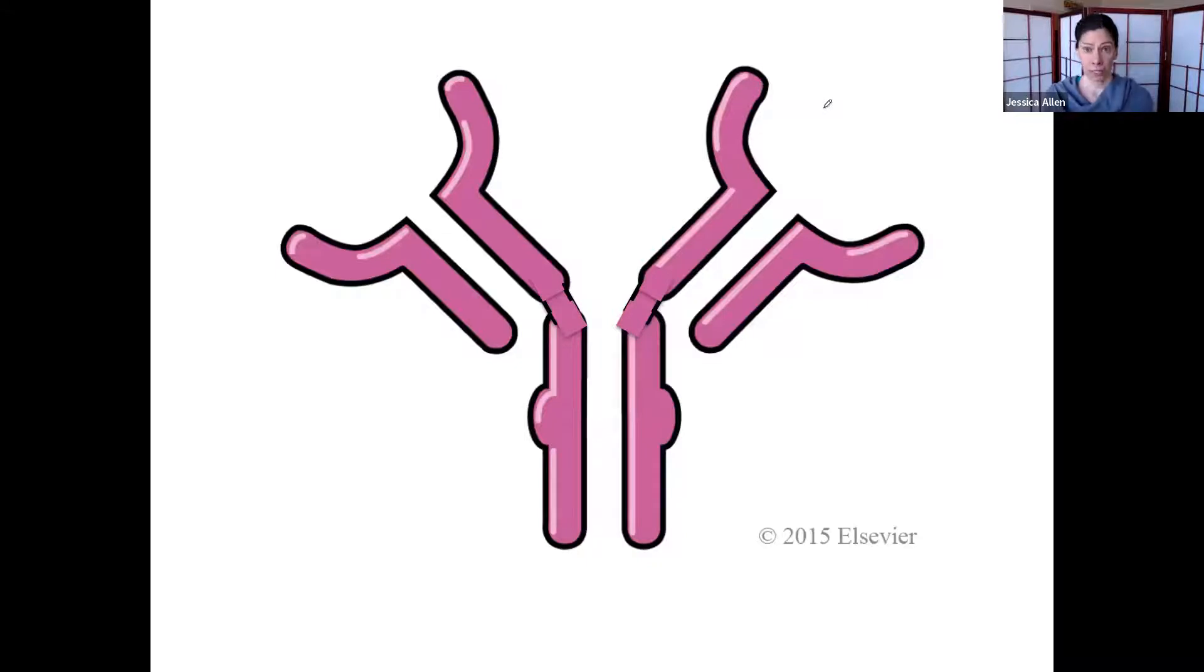We are going to go through the process of B cell development. I just want to start out by reminding you that each B cell receptor is made up of two heavy chains and two light chains.